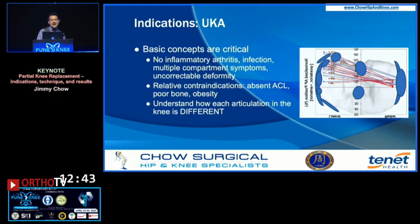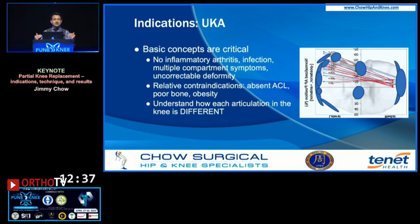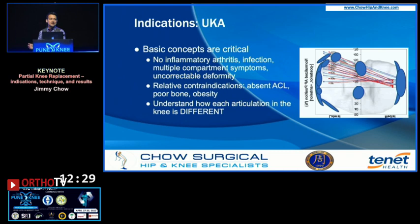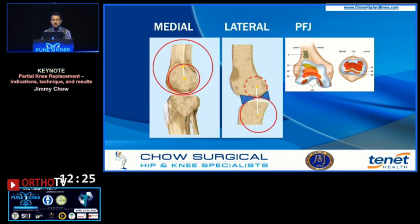Relative contraindications would be an absent ACL, poor bone quality, or obesity. I say relative contraindications because it depends on the style of unicompartmental knee that you're doing. Understanding how each articulation in the knee is different and distinct really helps you in doing a partial knee replacement and setting your criteria for such.